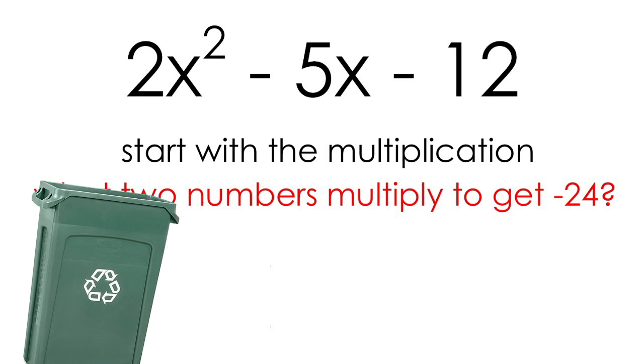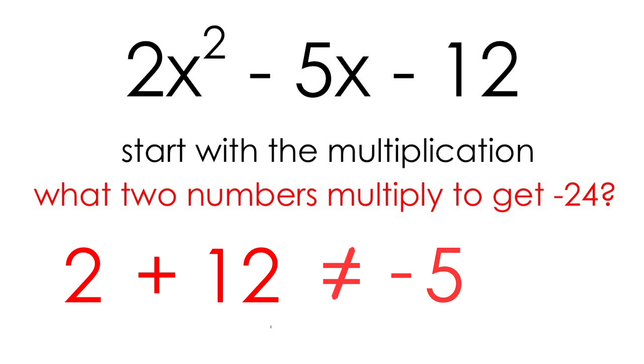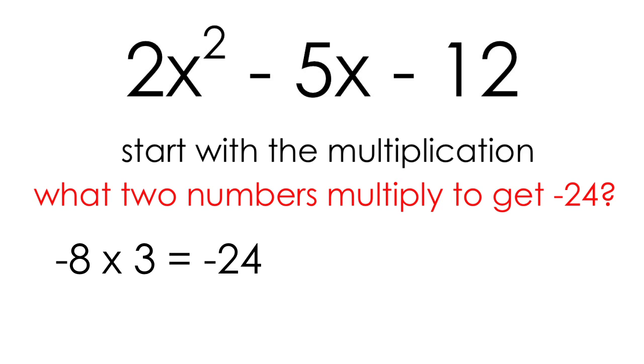The numbers 12 and 2 are pretty far apart, which makes it impossible for them to get anywhere close to negative 5 when I add them. So I move on to another combination of numbers that will multiply to get negative 24. This time I want to pick numbers that are closer together. For instance, negative 8 and 3. I know negative 8 times 3 is negative 24, but there's also another combination, negative 3 times 8.